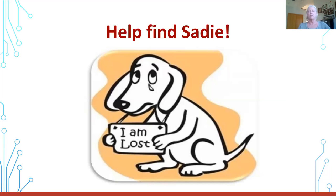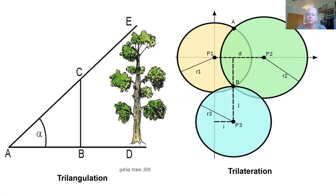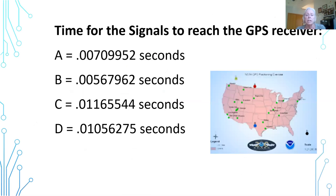We're going to try to find Sadie, who is a lost puppy. Sadie happens to have a GPS receiver on her, so students are given that large map I showed you. It's important to point out to them the difference between triangulation and trilateration. Triangulation is what you would use — the trigonometry, for example — to find the height of a tree, or where you should put a cannonball to knock down your neighbor's castle walls. Trilateration is slightly different. In this case, we're going to be using four satellites and the time it takes for a receiver to get a signal from those satellites. I've provided four different times for the signals coming from satellites A, B, C, and D — this is the time it takes from the satellite to Sadie.